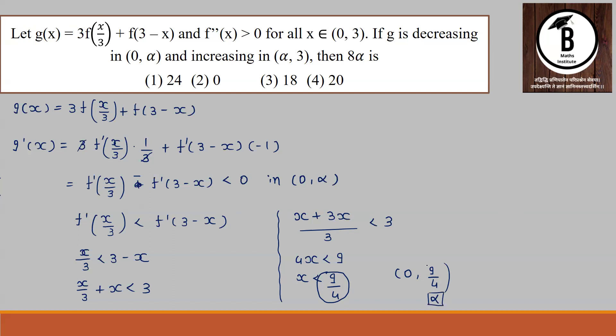We have to find 8α. Therefore, 8α = 8 × 9/4 = 2 × 9 = 18. So our correct option is the third one, which was asked in the question.